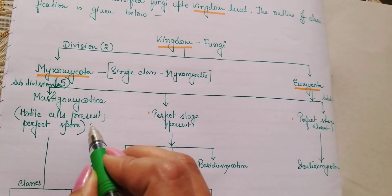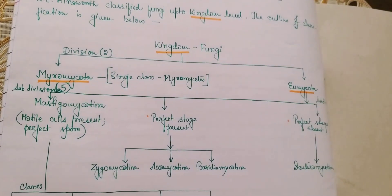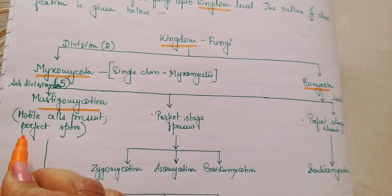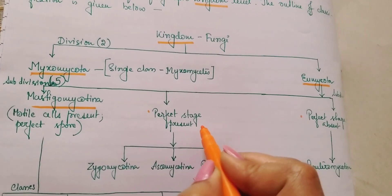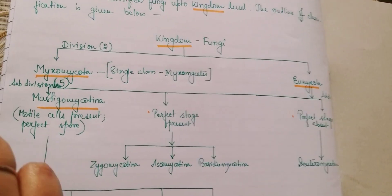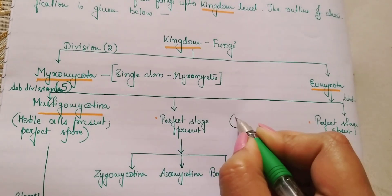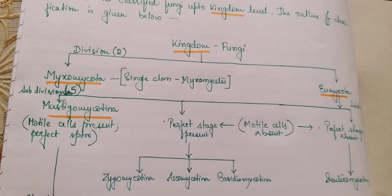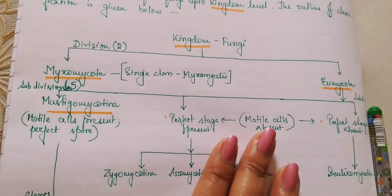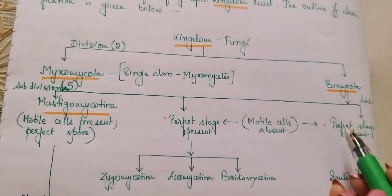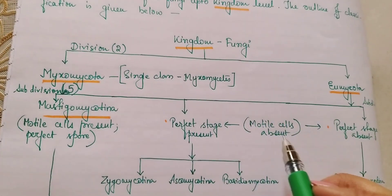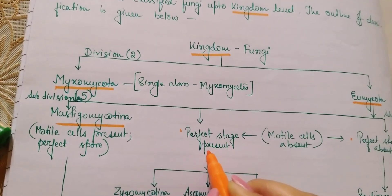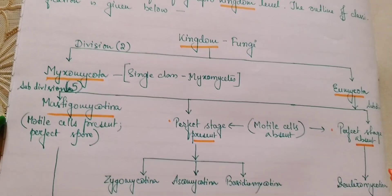Now under Eumycota, it is broadly divided into two categories. The first category is where motile cells are present — that is Mastigomycotina. The second category includes two groups where motile cells are absent. Among those two groups, one has a perfect stage present and the other has an absence of perfect stage.